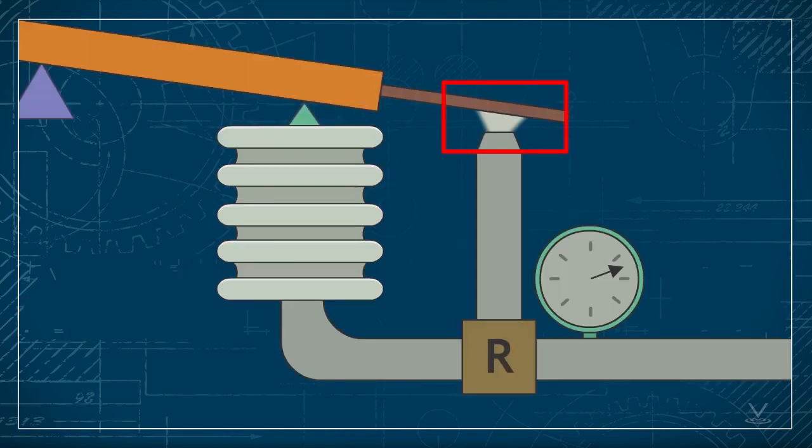This is where the controller computes any difference in the measured signal and setpoint. If the beam's position changes, it changes the relationship between the flapper and the nozzle, which results in changes in back pressure.